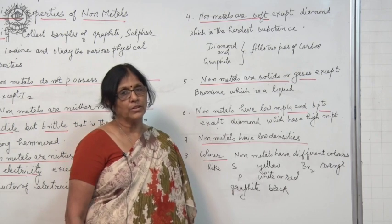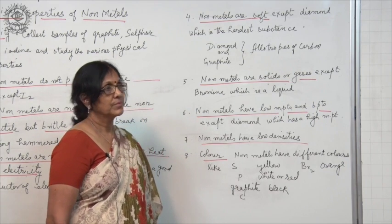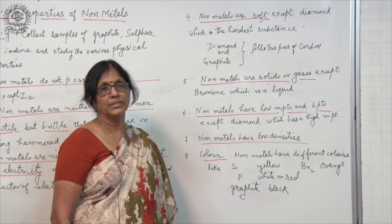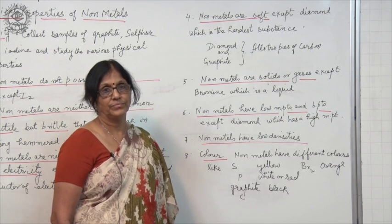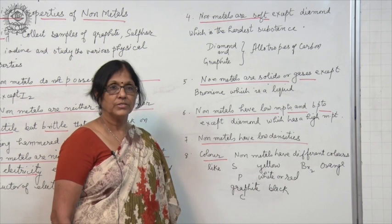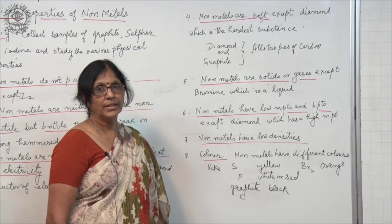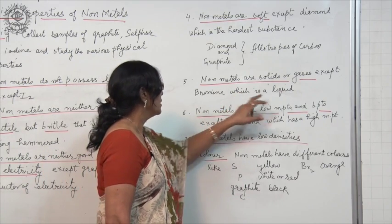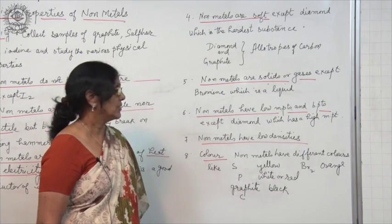Most of the non-metals are solids or gases. Like oxygen is a gas, hydrogen is a gas, sulphur is a solid, graphite is a solid, except bromine which is a liquid. This is an exception.